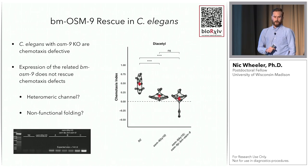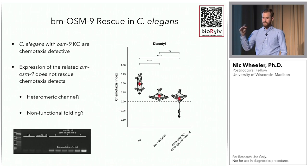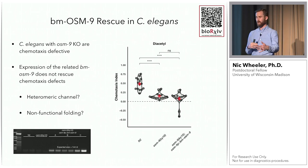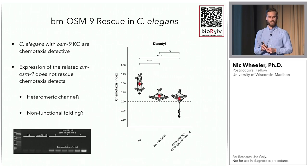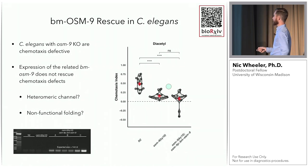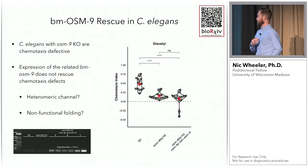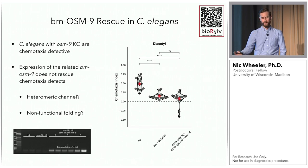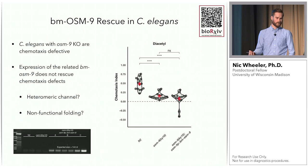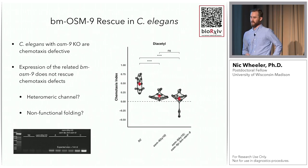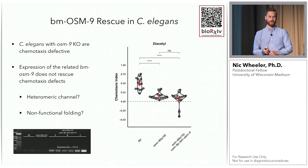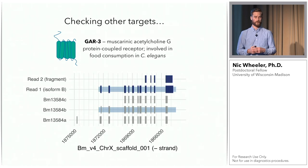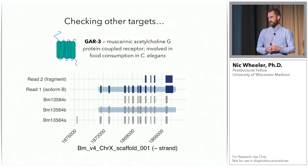We expressed the corrected Brugia OSM-9 in a C. elegans knockout. There are really good chemotaxis assays in C. elegans — OSM-9 knockouts are unable to chemotax to diacetyl. We expressed Brugia OSM-9 in the knockout to see if it would rescue. It didn't rescue, but we know it's not because the gene model was incorrect. There's some other biological thing going on, which actually opens up really interesting avenues for studying the chemosensation pathway of nematodes.